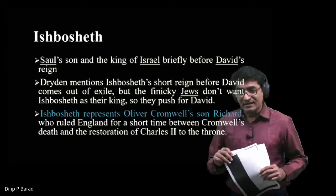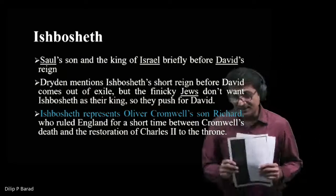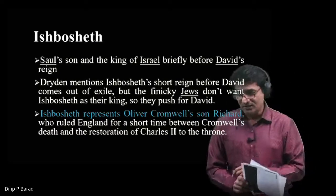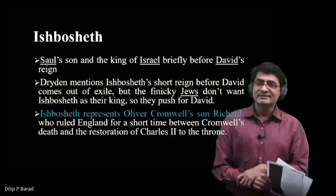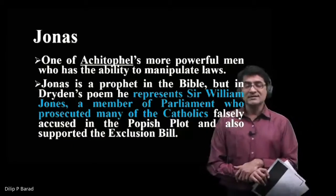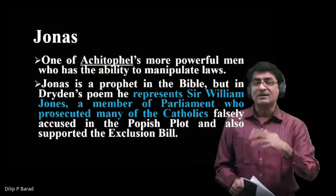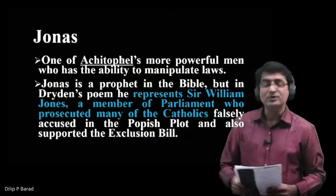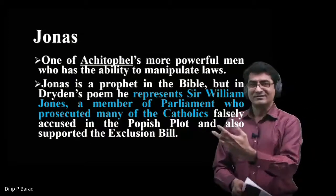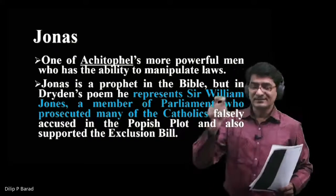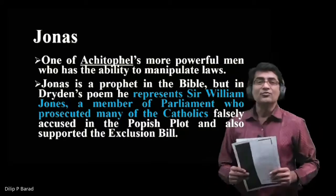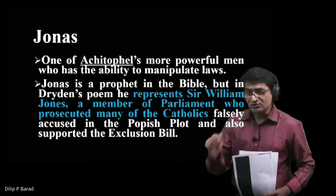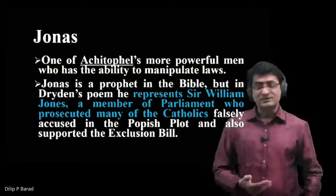Ishbosheth is Saul's son and briefly the king of Israel before David's reign — representing Oliver Cromwell's son Richard, who ruled England for a short time before Charles II was restored in 1660. Jonas is one of Achitophel's more powerful men, with the ability to manipulate laws. Jonas is a prophet in the Bible, but in Dryden's poem he represents Sir William Jones, a member of parliament who prosecuted many Catholics falsely accused in the Popish Plot and also supported the Exclusion Bill.